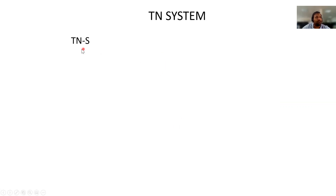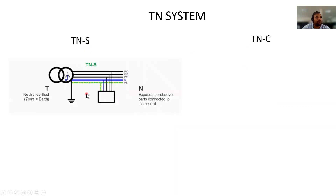The TN system has two classifications: TNS and TNC. In the TNS system, the supply-side neutral is earthed and a separate earth conductor runs from the supply end all the way to the load end, directly connecting to the equipment. Since the earth and neutral are separated, this is called TNS — T for earth, N for neutral, S for separated.